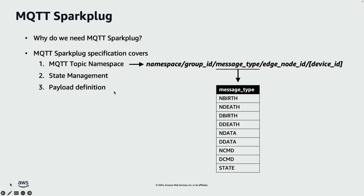Finally, for the payload, the latest Sparkplug B definition uses Google Protocol Buffers, or simply called protobuf, to encode the messages. Protobuf is a popular messaging format that's bandwidth efficient, faster in encoding and decoding, and also comes with a stronger type system than JSON, for example.